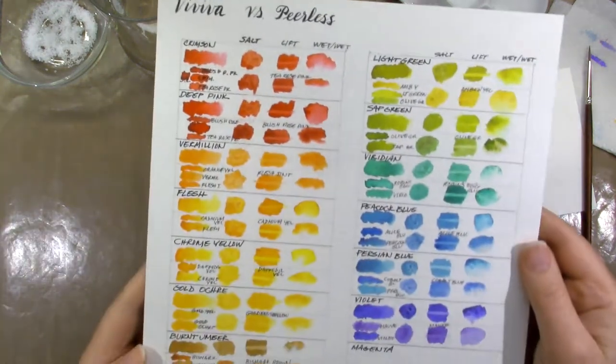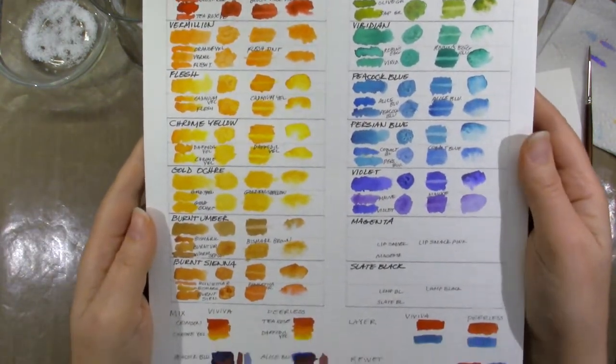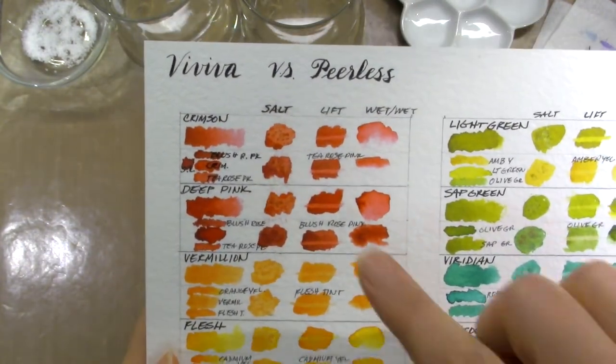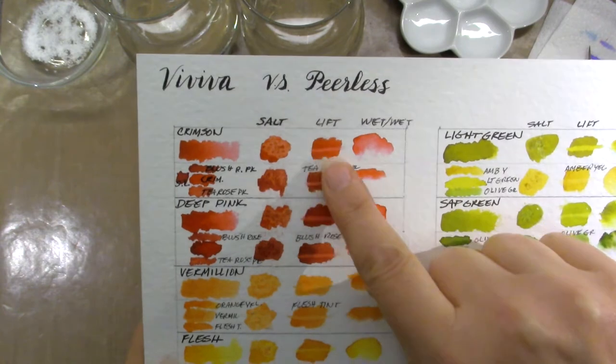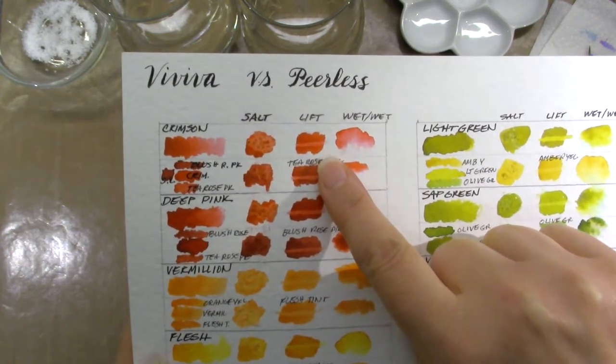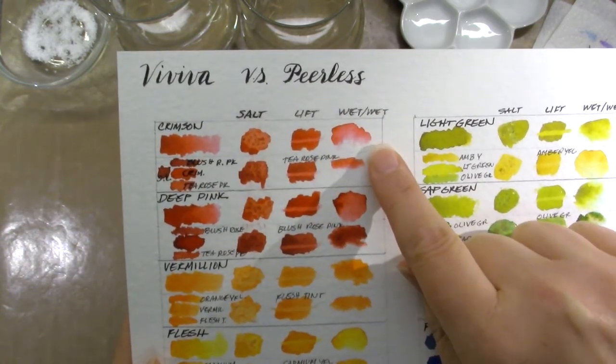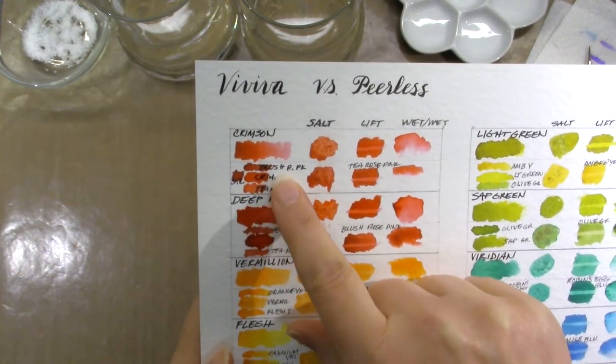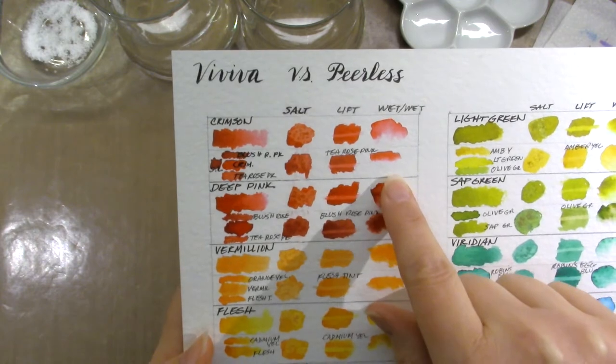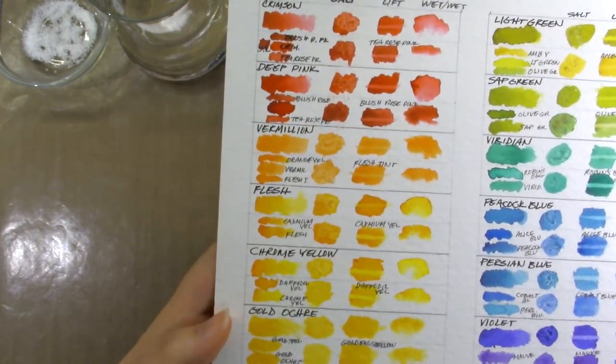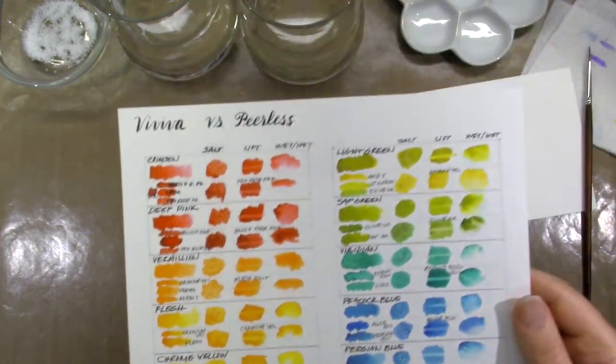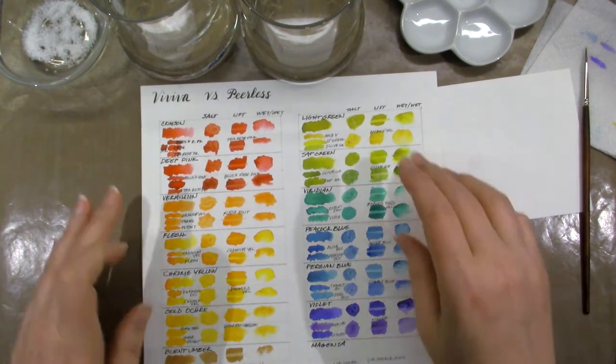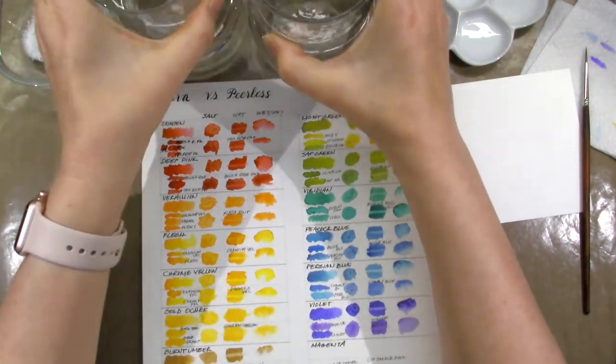This is my test sheet for comparing the Viviva against the Peerless. I did one of each of the Viviva, and then tried to match the closest Peerless. I did a salt test, lift test, and a wet on wet test. I also looked for the color that is the most similar from the Peerless set down here, and did the same test with the Peerless. The link below this video will take you to a post which will have much more information, plus close-ups of each of these tests. I'm going to show you how I did this with just two colors.